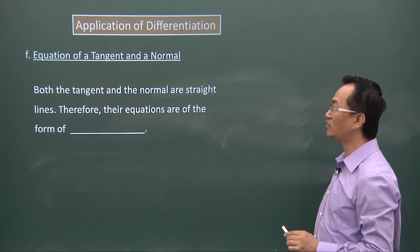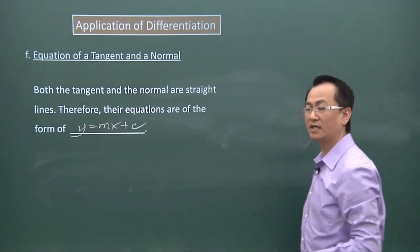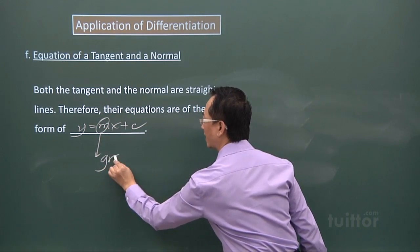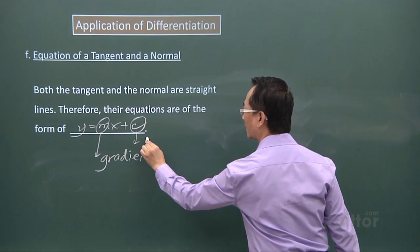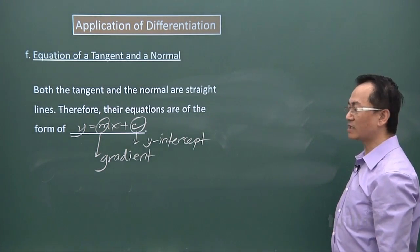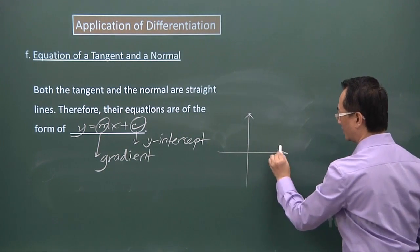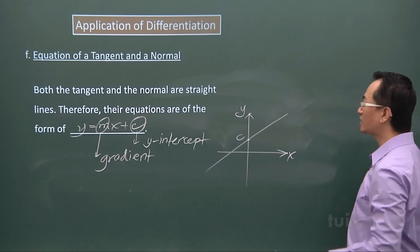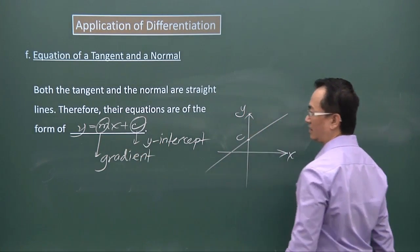Therefore, both the tangent and normal must have this form: y equals mx plus c. Just to revise a little on this, m is the gradient of the straight line, and c is the y-intercept — the point where the straight line cuts the y-axis. For instance, if I have a line that goes a certain way, the c value is where that straight line cuts on the y-axis.